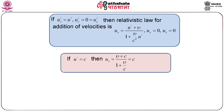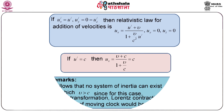If u dash equals c (the speed of light), what happens? Putting u dash equal to c in the formula, we get u x equal to c. So one can conclude that the speed of light remains invariant in different inertial frames. We have already mentioned this; here we have verified the result.